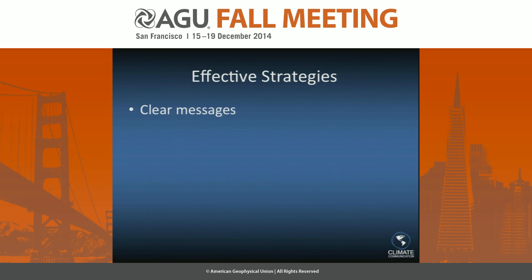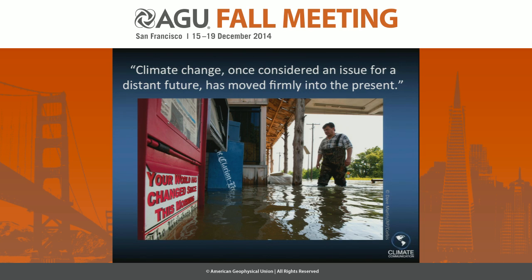Among the strategies that we used were clear messages and professional photographs. This slide illustrates examples of both. The photograph is from a professional photojournalist who knows how to make a picture speak a thousand words. The selection of photographs was done by communication professionals using the latest science of science communication. There are a lot of people in this report — we went into it knowing that climate change is about people, not just about ice at the poles. Photographs of people resonate more and are more memorable.